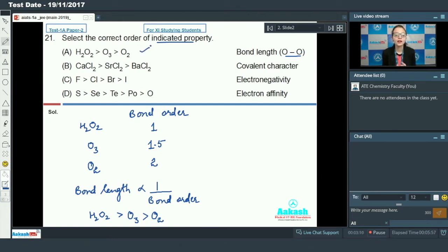Second, CaCl2, SrCl2 and BaCl2 - we need to compare their covalent character. If you look at the given compounds, anion is same. So, there is a difference of cation only. According to Fajans' rule, the cation having smallest size shows high polarization. So, this order is correct.